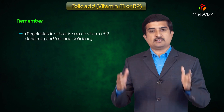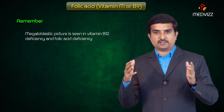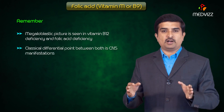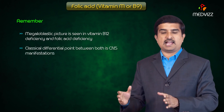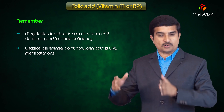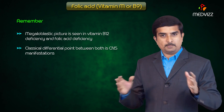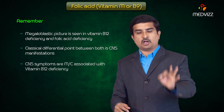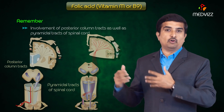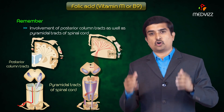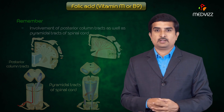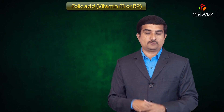The megaloblastic picture is seen in both vitamin B12 deficiency and folic acid deficiency. The classical differential point between the two is CNS manifestations — CNS symptoms are more commonly associated with vitamin B12 deficiency, which typically involves the posterior column tracts as well as pyramidal tracts of the spinal cord. This is what we need to know about folic acid.